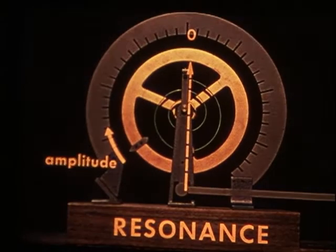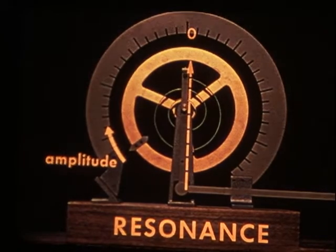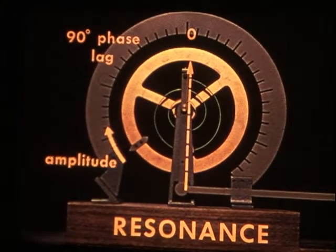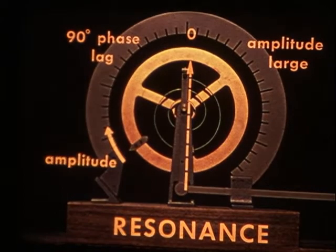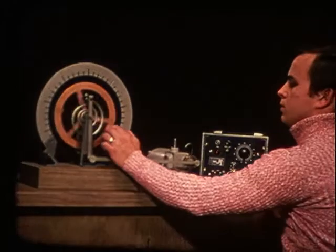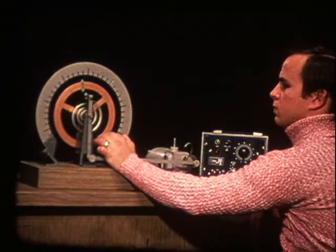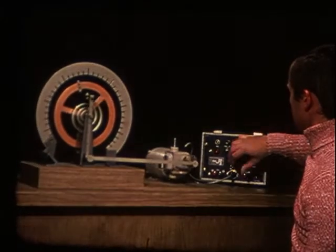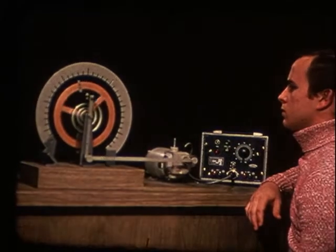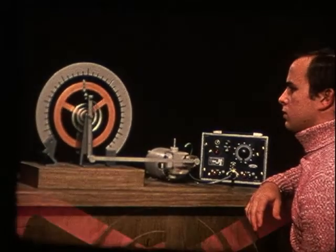The phase lag continues to increase as the driving frequency is raised beyond resonance. It reaches 180 degrees as a limiting value. Notice that the oscillator's amplitude is down again and that it lags the driver by half an oscillation. For example, the driver is at extreme right when the wheel is at extreme left. The phase lag is 180 degrees.